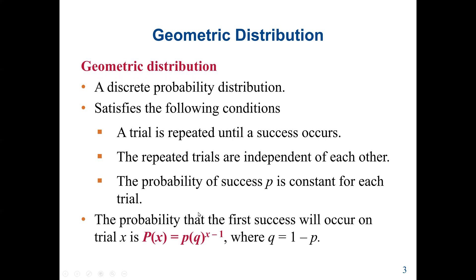The probability that the first success will occur on trial X is given by P, the probability of success, times Q, the probability of failure, raised to the power X minus 1. X is our random variable, and Q equals 1 minus P.